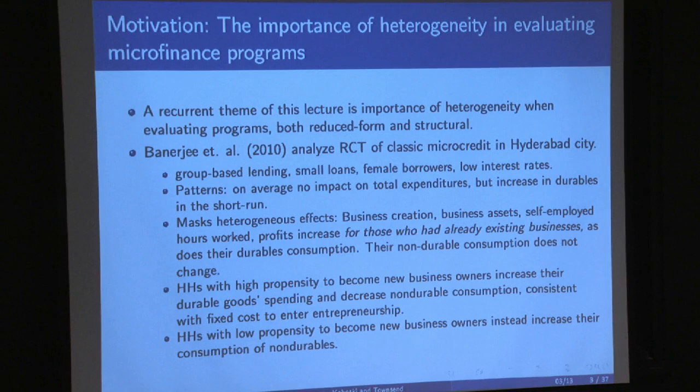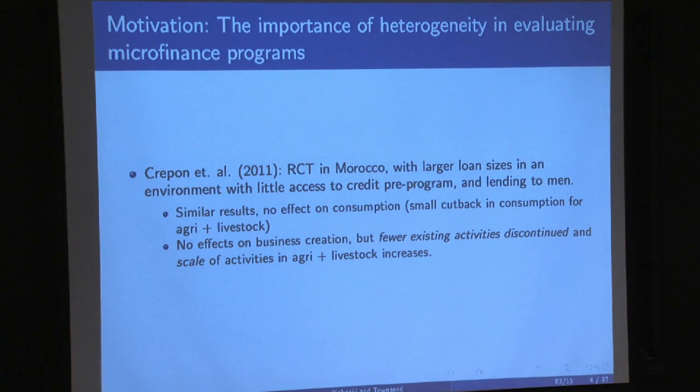So various heterogeneous impact based, by the way, on observables, namely current business owners, and unobservables that are backed out through these propensity scores, as in probits. Morocco similar, larger loans lending to men, no effects on consumption, maybe some small reduction in consumption for those doing agriculture and livestock, no effect on business creation. But within existing businesses, certain activities were discontinued less often. And the scale of other activities, as in agriculture and livestock, increase.